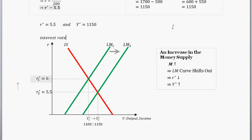So with investment up, that's going to drive up output. So that's how we have our decrease in the interest rate from 6 to 5.5, and that's how we have the increase of output from 1100 to 1150.